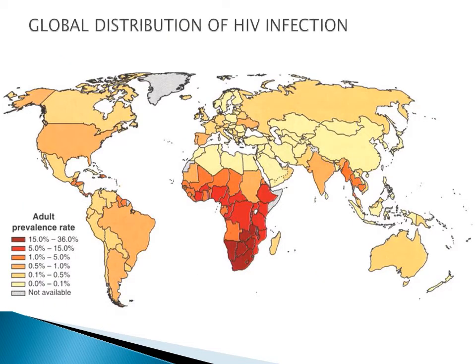A global map shows the distribution of HIV prevalence. The continent most heavily affected is Africa, including our country, which has a very high number of people living with HIV and AIDS. In the US, Europe, and Australia, the rates are relatively lower compared to Africa.